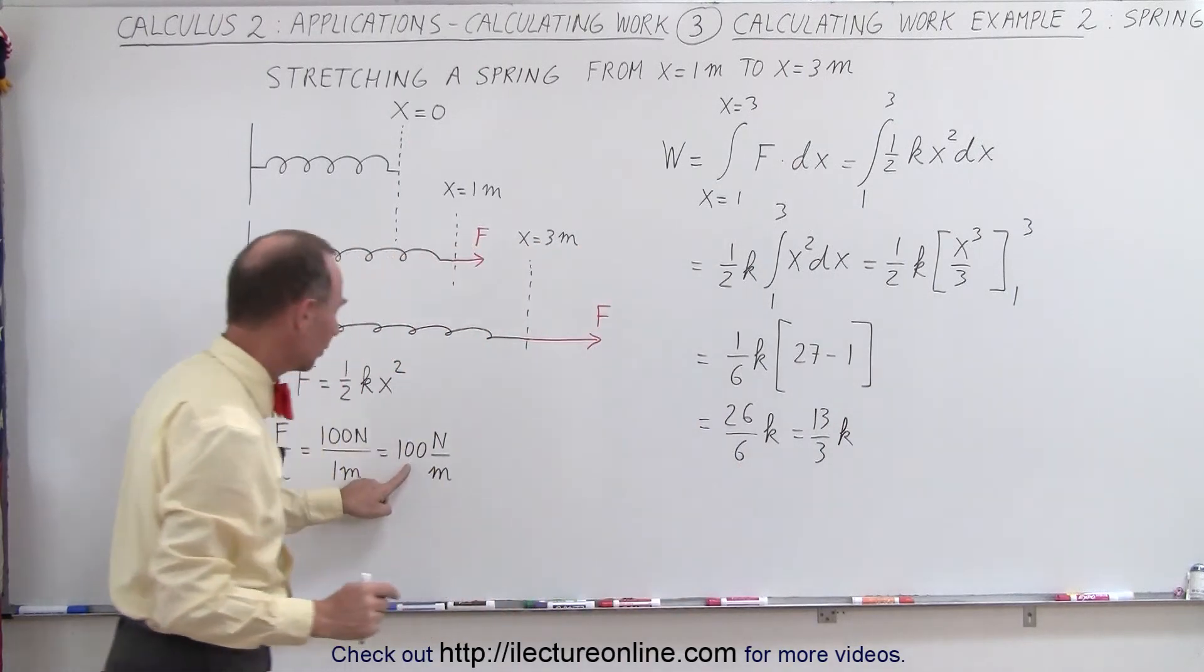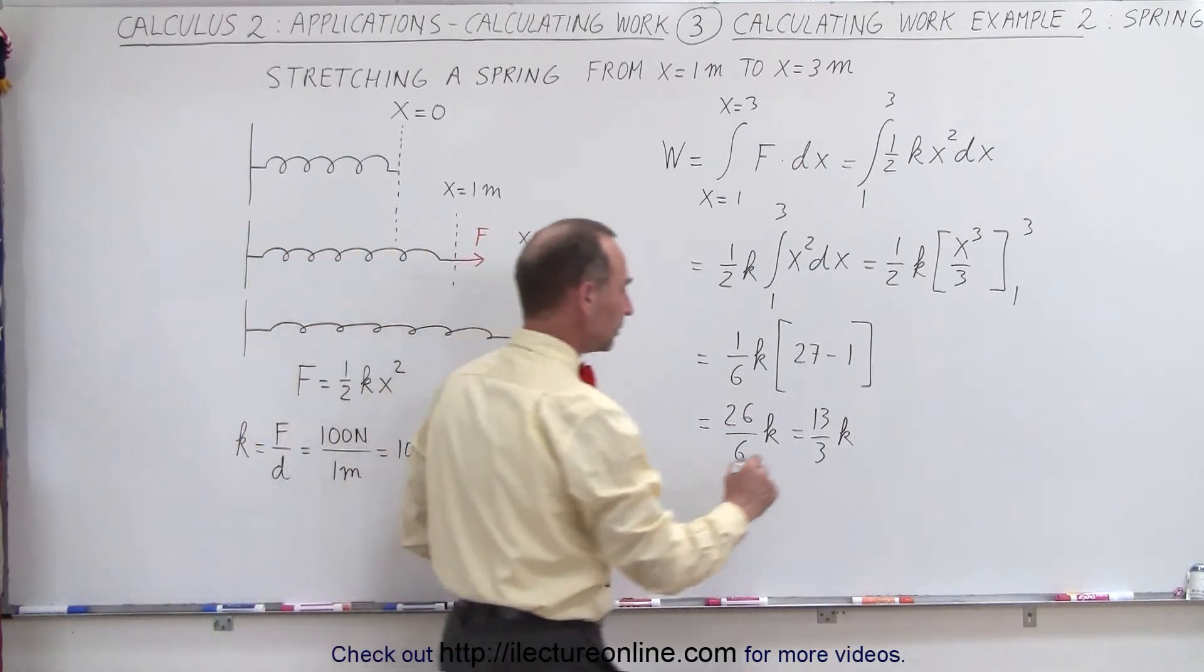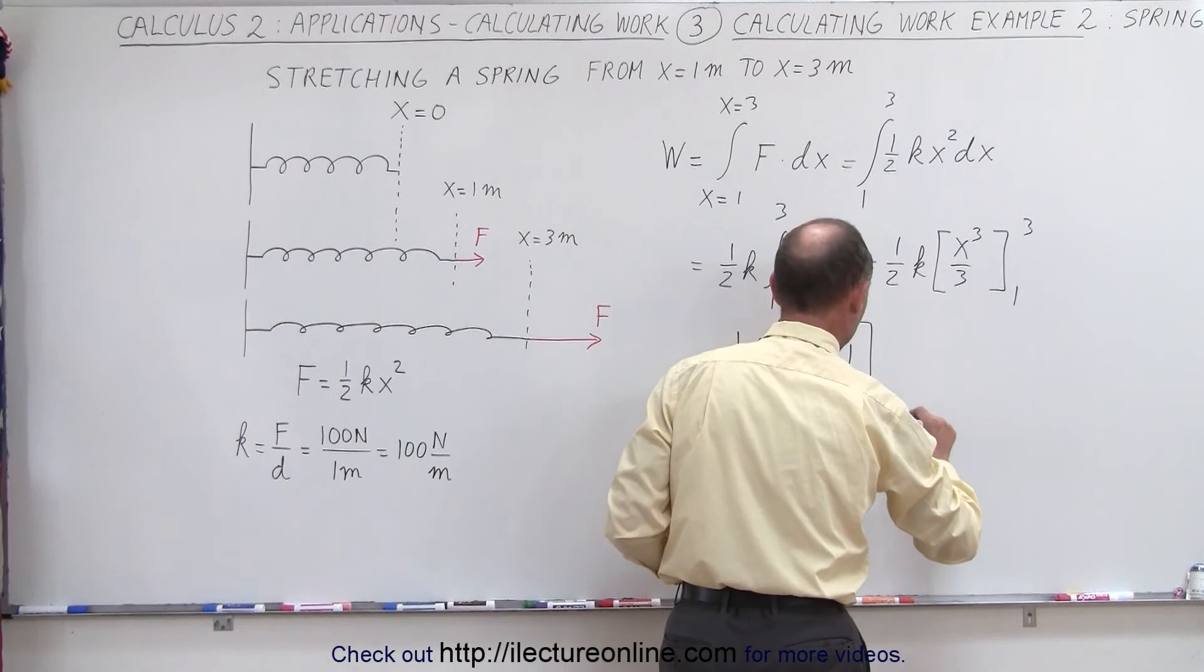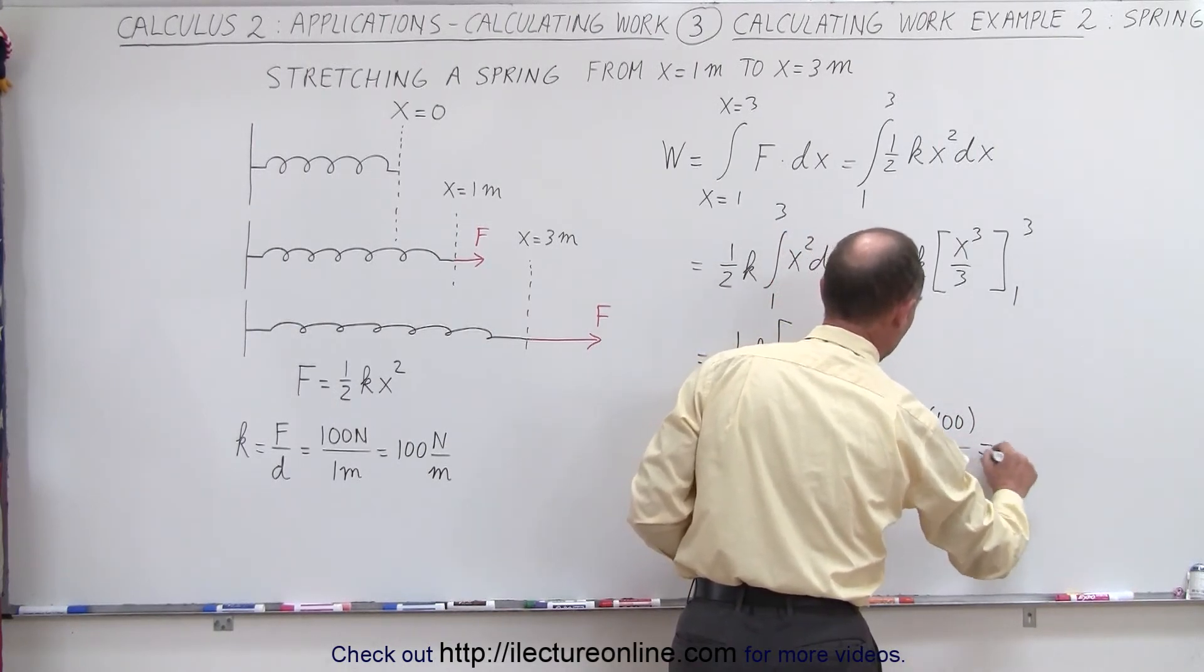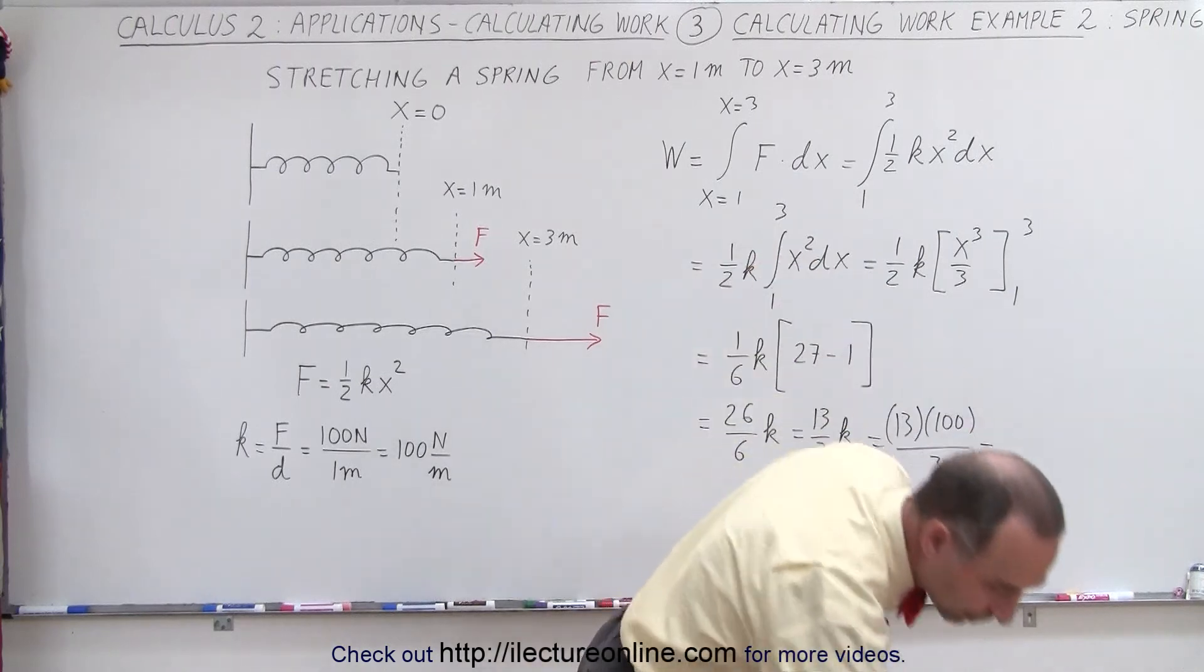And since k is equal to 100 newtons per meter, that's equal to 13 times 100 divided by 3. And of course, 1300 divided by 3.